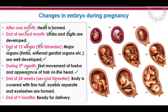At the end of 24 weeks — the second trimester — the body is covered with fine hair, eyelids separate, and eyelashes are formed. At the end of the third trimester, the baby is ready for delivery. The development of a full life over nine months is truly incredible.